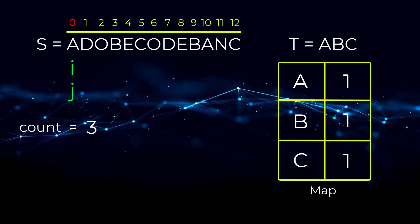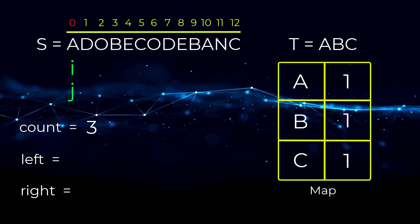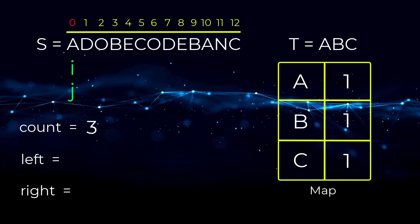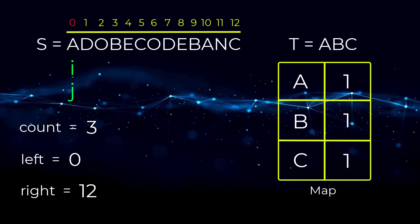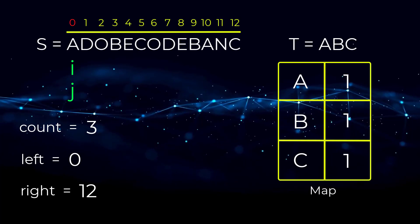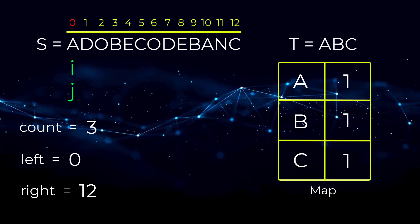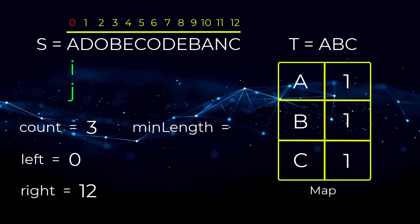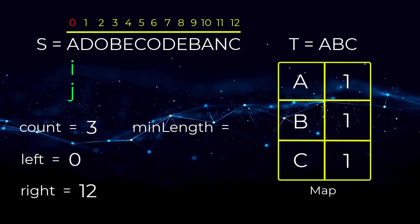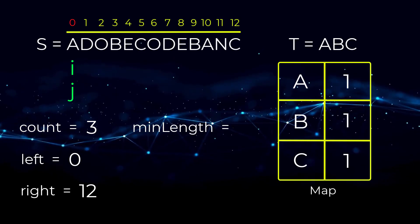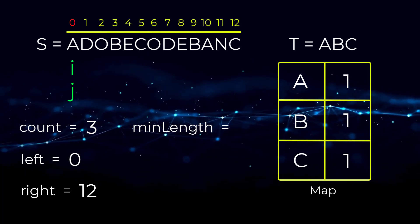We need a couple of variables. We'll have an I and J pointer, both pointing at index zero in string S. A variable called count is initialized to the number of unique characters in string T — so count is three. We also initialize left and right variables to track the minimum substring positions, and a min length variable initialized to 13 for convenience.